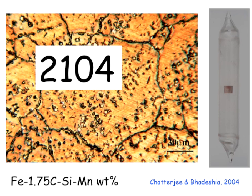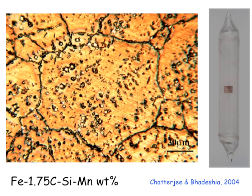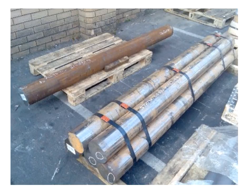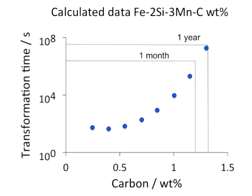Question: What is the carbon percentage in the flash bainite steel — is it 1.75 weight percent? Answer: No — that figure is for the 100-year experiment. The flash bainite steel is approximately 0.95 weight percent carbon, because that allows transformation within 10 days.